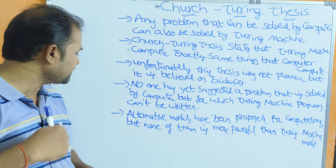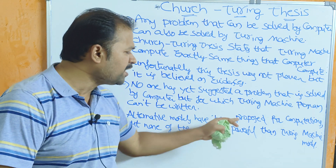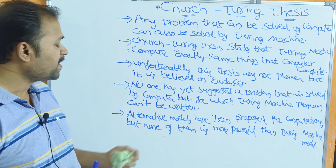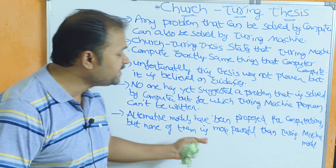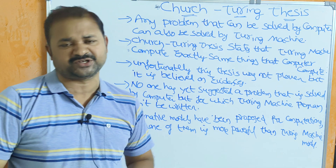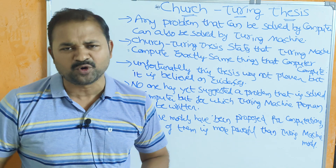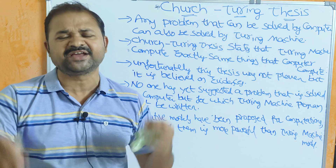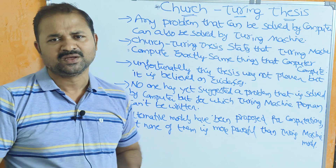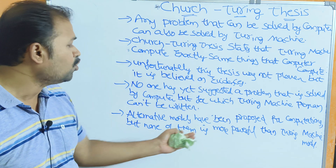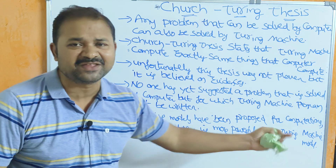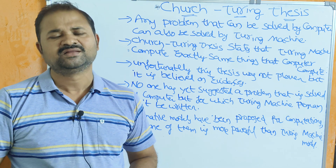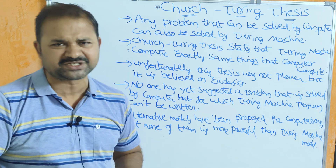The last point: alternative models have been proposed for computation, but none of them is more powerful than the Turing machine. In place of a Turing machine we can use those models, but none surpasses it. That means the Turing machine is more powerful than all conventional alternative models.